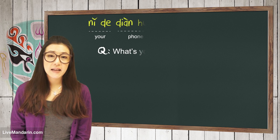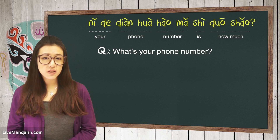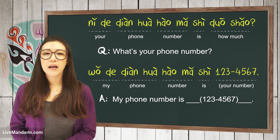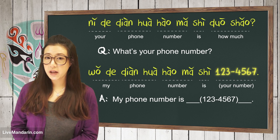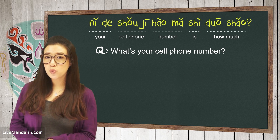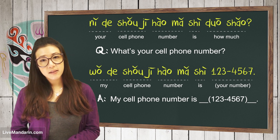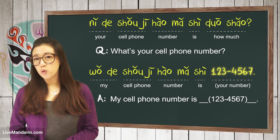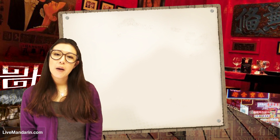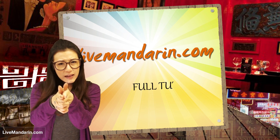Let's review today's dialogue. 你的电话号码是多少? 我的电话号码是1234567. 你的手机号码是多少? 我的手机号码是1234567. Leave any comments or questions in the bottom, and don't forget to get some phone numbers.